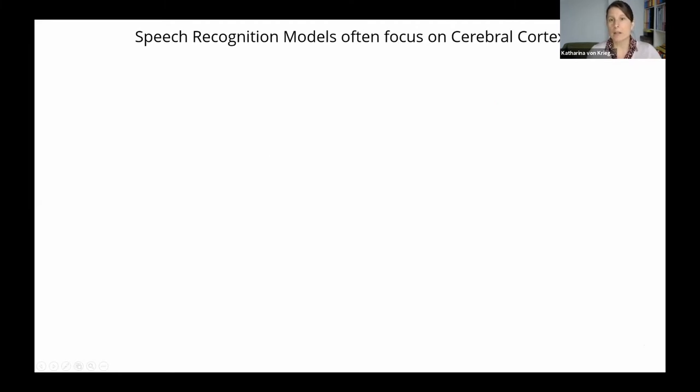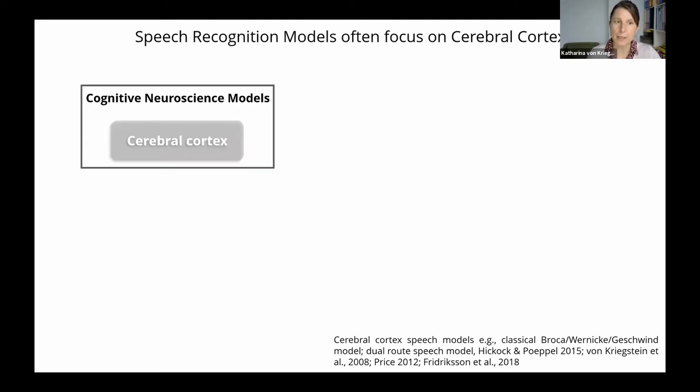In our models on how we think about how speech is processed in the brain, we often focus very much on the cerebral cortex. And this view implicitly assumes that the auditory and the visual sensory pathways are just input structures to the cerebral cortex, which then does the interesting analysis parts for speech recognition.